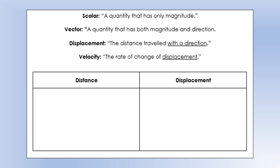Now let's introduce some other properties of motion, specifically vector quantities. A scalar quantity is something that only has magnitude — no direction. Things like energy, speed, and distance are scalars. We just give them a number: 20 joules, 5 meters, 20 miles per hour — those are all scalars. A vector quantity has both magnitude and direction, for example 20 meters to the left.